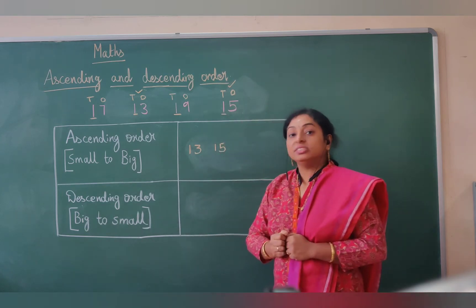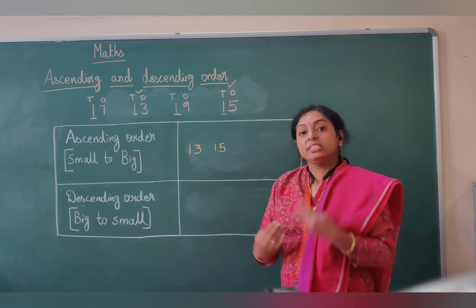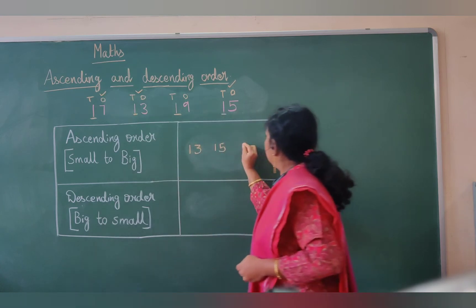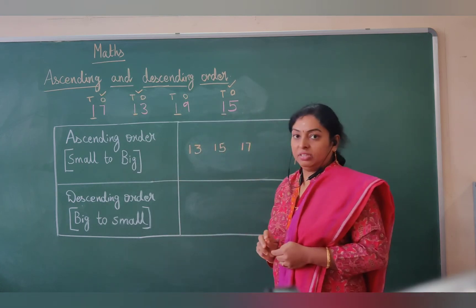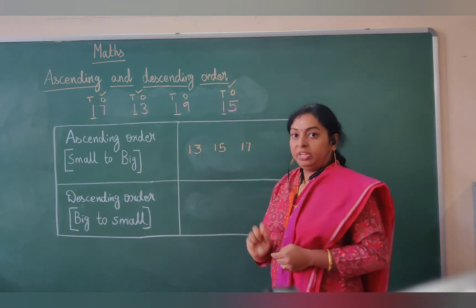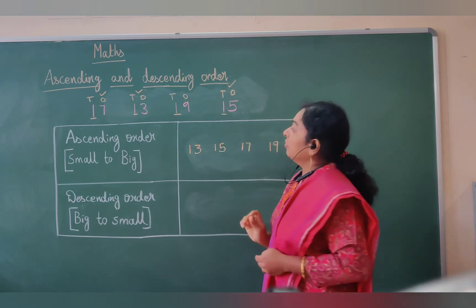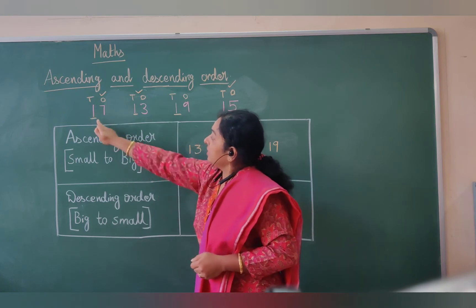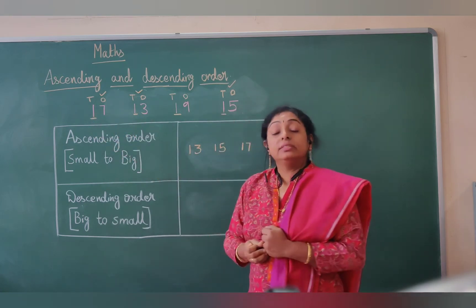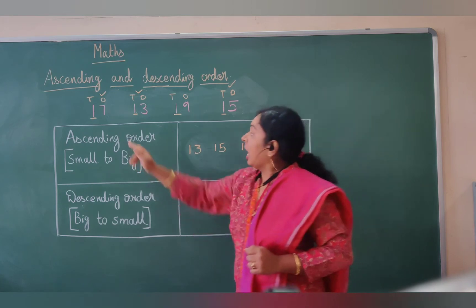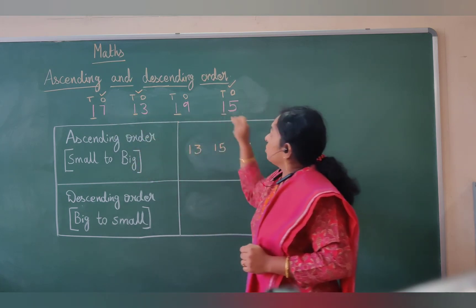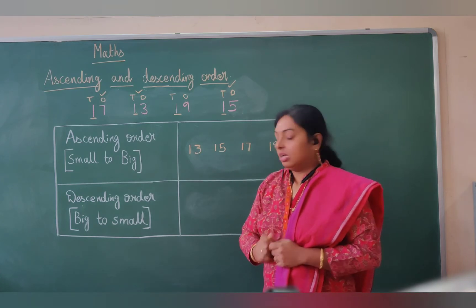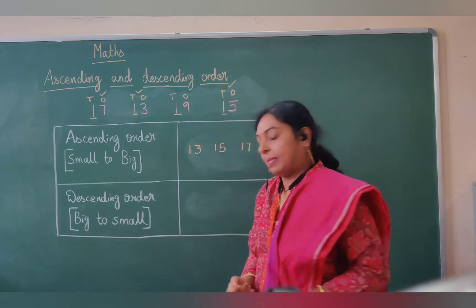After 15, which number is the next smallest? We have 17 here, so let me write 17. The last one is 19, the biggest number. I looked at the tens place first — since the tens place has a common digit, that is 1, I just compared the ones place of the given numbers and arranged them accordingly.